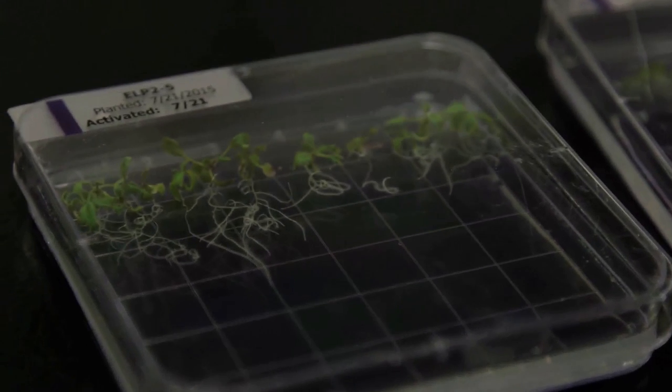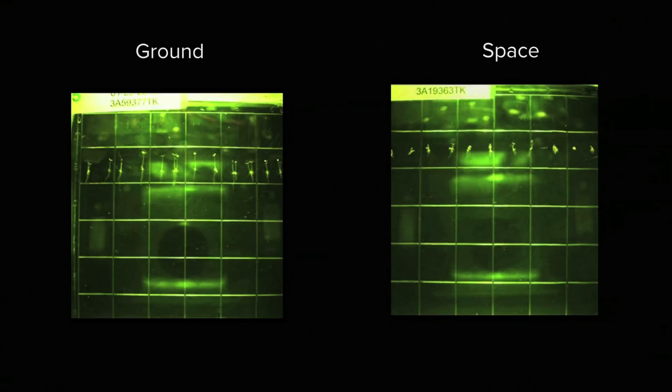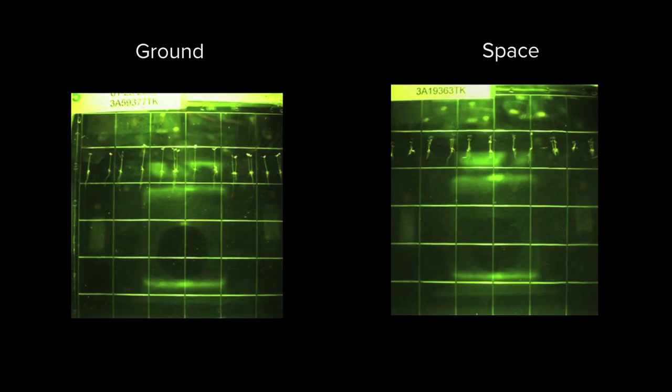One idea would be that in the absence of gravity, the plant roots would simply wander around aimlessly. Another expectation might be that if light was a strong enough cue, they would simply grow in a single direction away from the light. At first, the space plants grew down the plate, like they would on Earth.